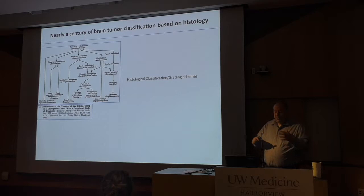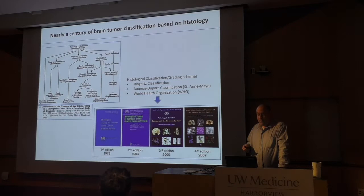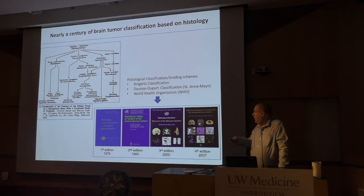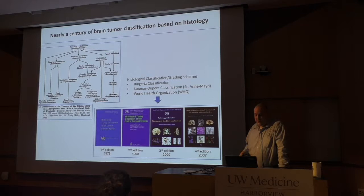The histological grading schemes changed a little bit over the years — the Ringers classification, the Saint Anne Mayo classification systems, which is the basis of what we do now, and then the WHO, whose first edition came out in the late 1970s and has been pretty much similar up through 2007, until the 2016 edition changed things.